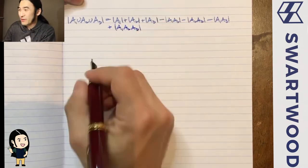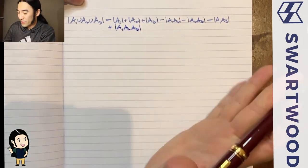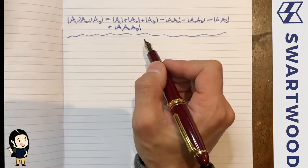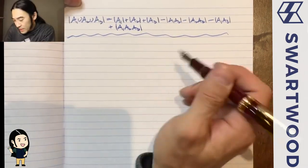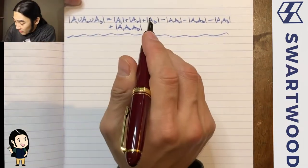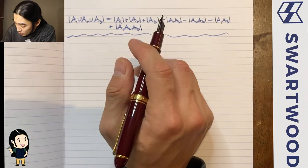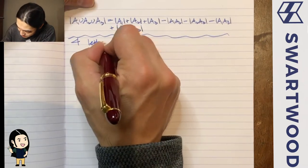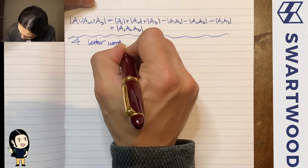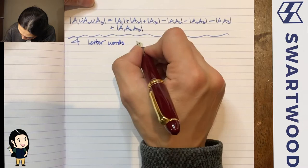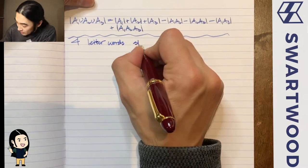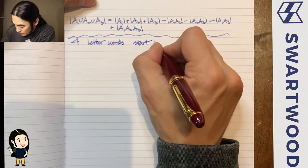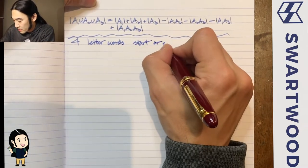But you add back the triple intersection. So let's take a look — let's say you want to know the number of four-letter words that either start with a consonant or end with a consonant.